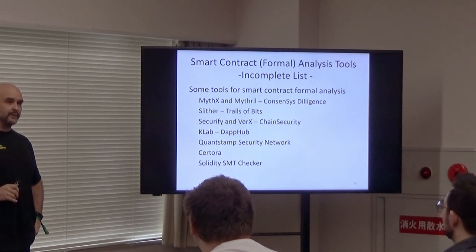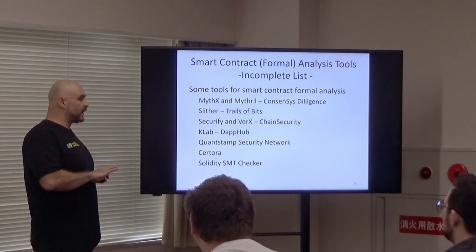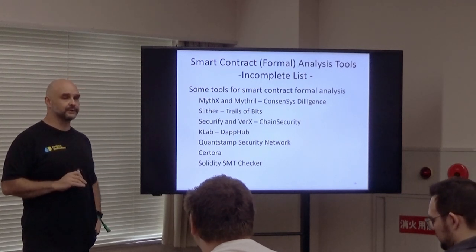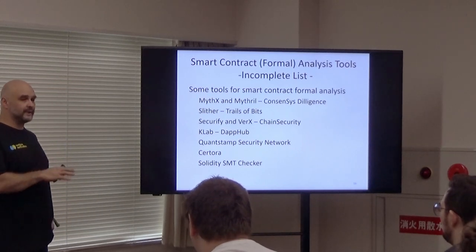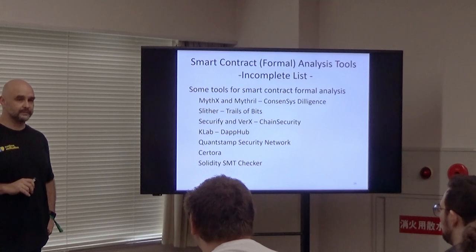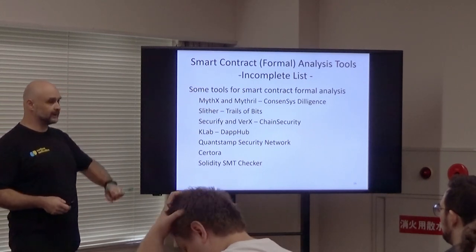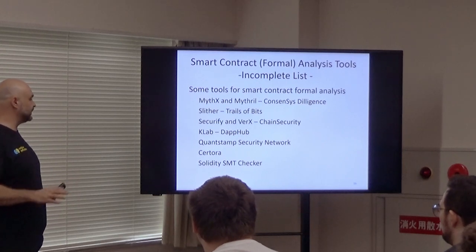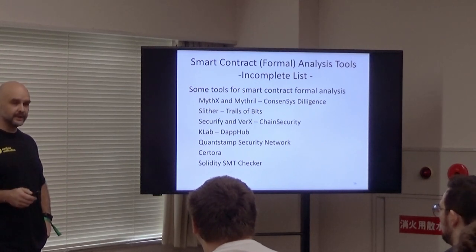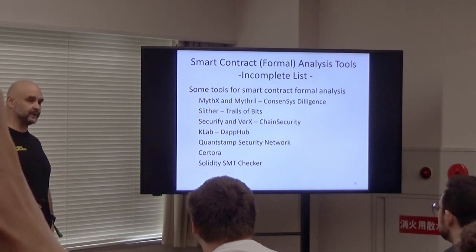Before diving into our own approach, there is a suite of tools with a high degree of automation for analysis of smart contracts that you should definitely look at and try, which are not developed by us — many of them have talks at this workshop. These include Mythril, Mythril, Slither, Securify, and Velix by Chain Security. These are amazing tools that you should use, especially when they work out of the box.